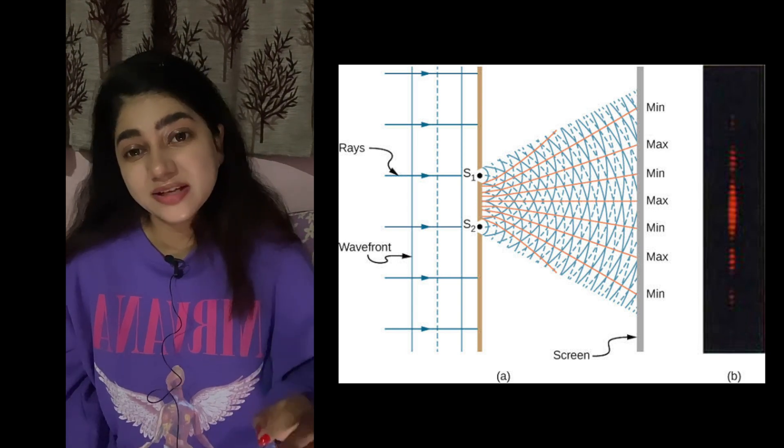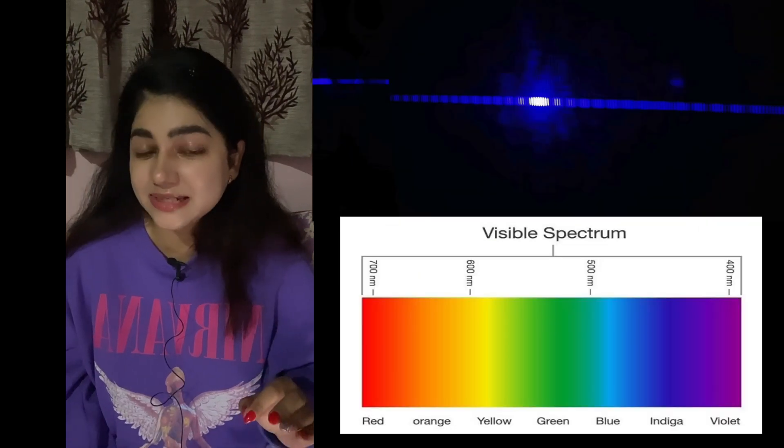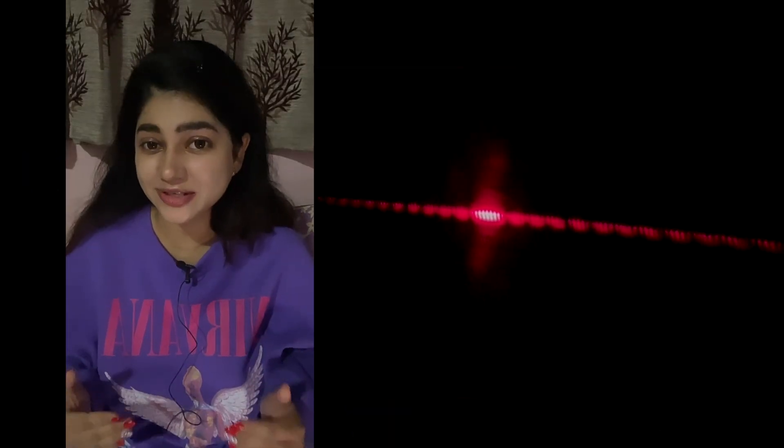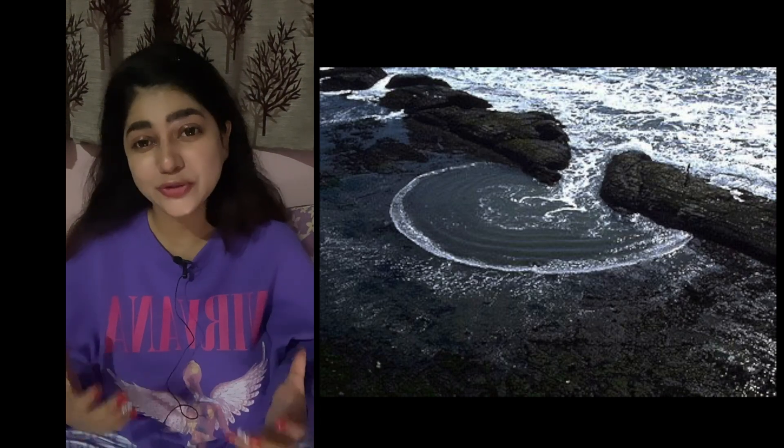The photons, behaving like waves, pass through these slits simultaneously and create an interference pattern. They overlap each other and create light and dark bands on the screen. This mind-bending phenomenon suggests that particles have wave-like properties and also interfere with each other.